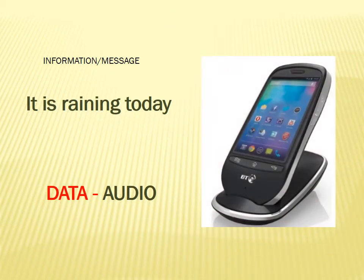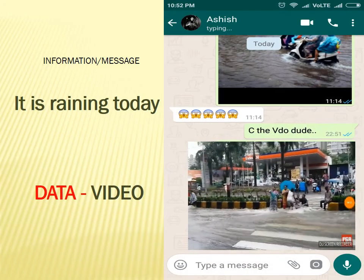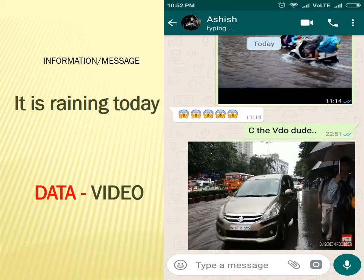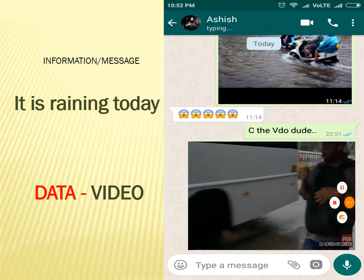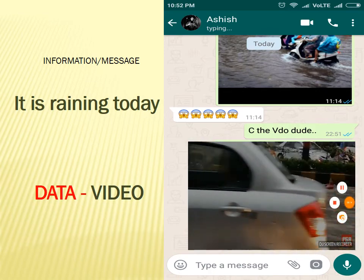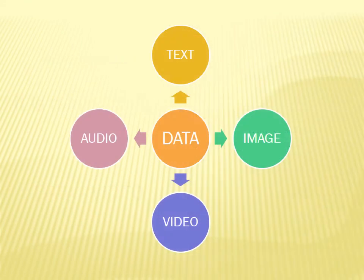The same information can also be shared via a phone call — the two friends can call each other and tell verbally that it has been raining in their area. And you can see that Ashish has also sent a video of his place to Suri to convey the same information. So to summarize: data can be text, audio, image, or video — these are all types of data.